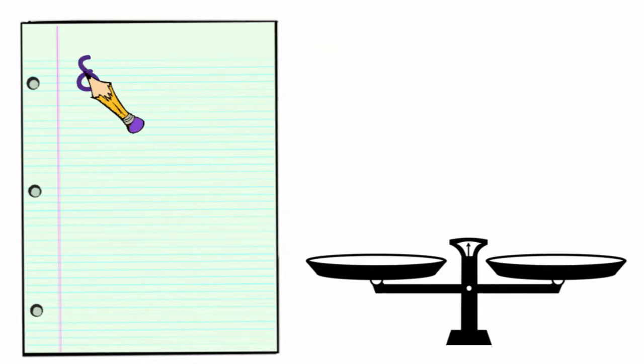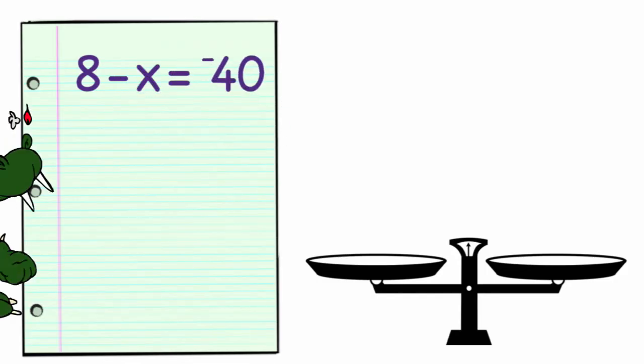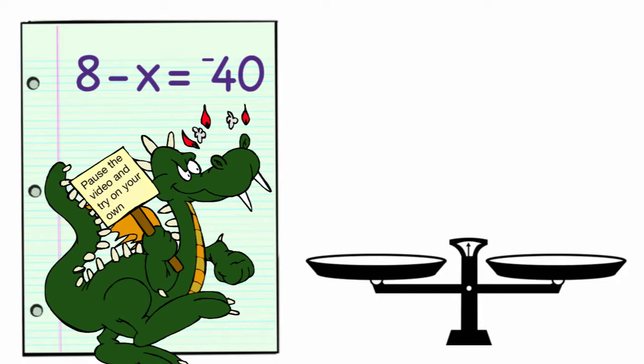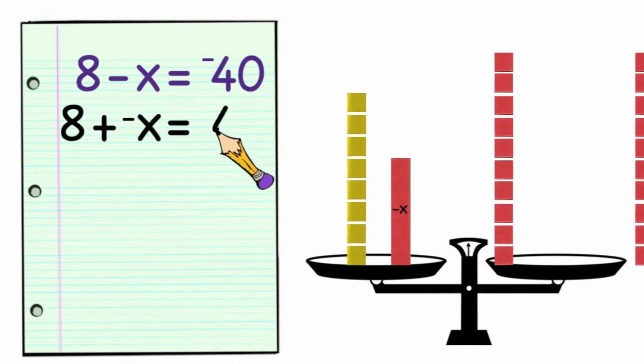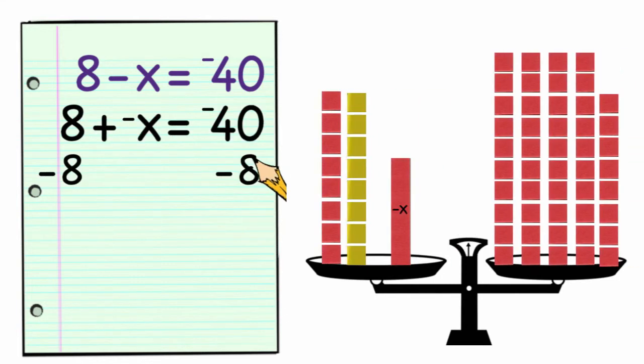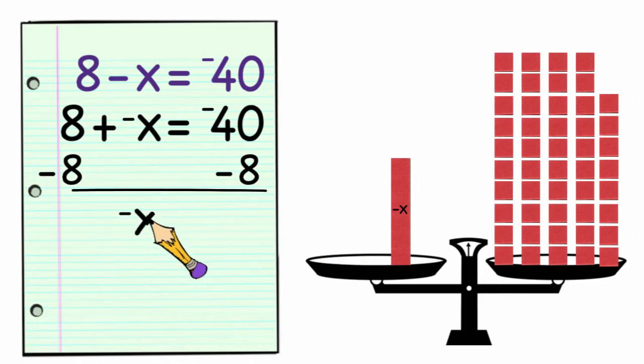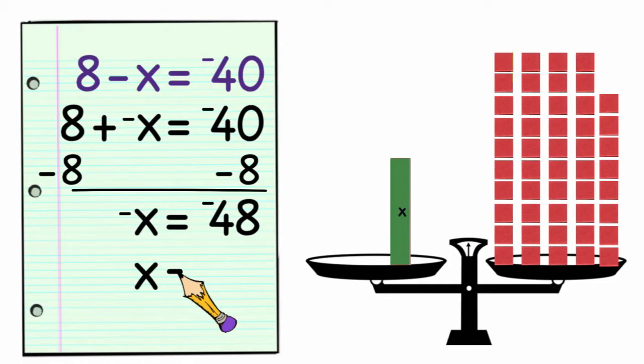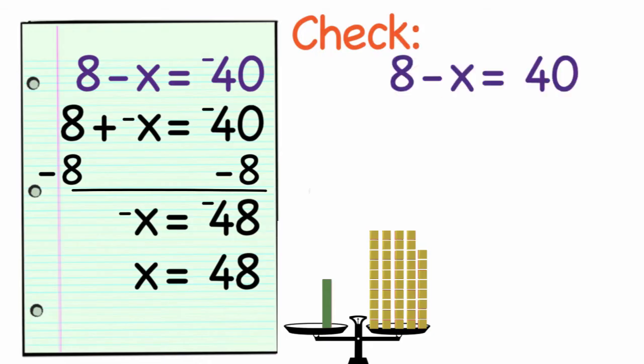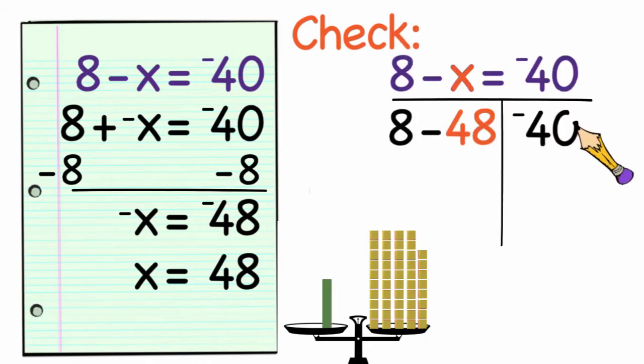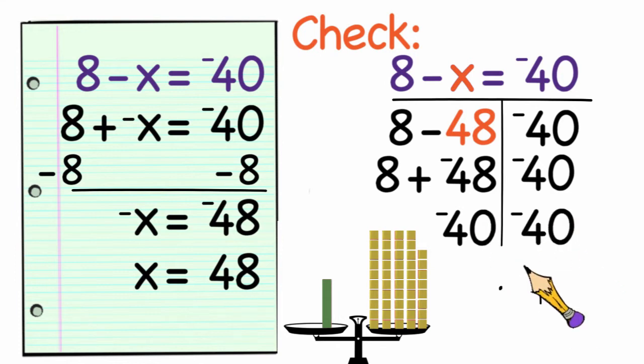Okay, let's try one more problem. 8 minus x equals negative 40. Once more, pause the video and try it on your own. To solve this, I'm going to rewrite the problem as 8 plus negative x equals negative 40. We'll add negative 8 to both sides of the equation, leaving us with negative x equals negative 48. We're not done yet. We need to find the answer for positive x. Remember, the negative sign can be thought of as taking the opposite. So the opposite of negative x is x, and the opposite of negative 48 is 48. So x is equal to 48. Let's check this. 8 minus 48 equals negative 40. So both sides of the equation equal negative 40, and the problem checks.